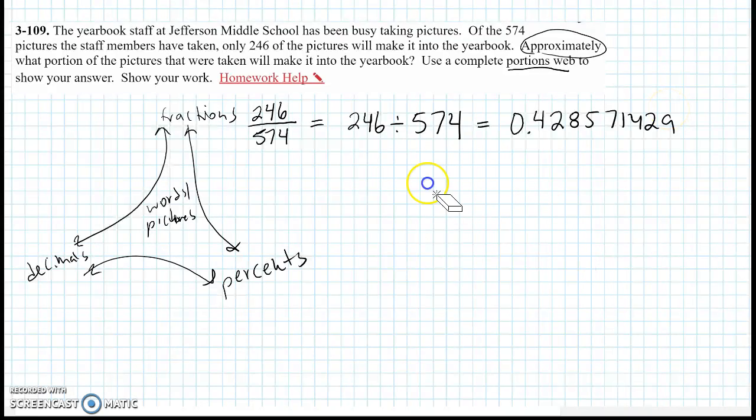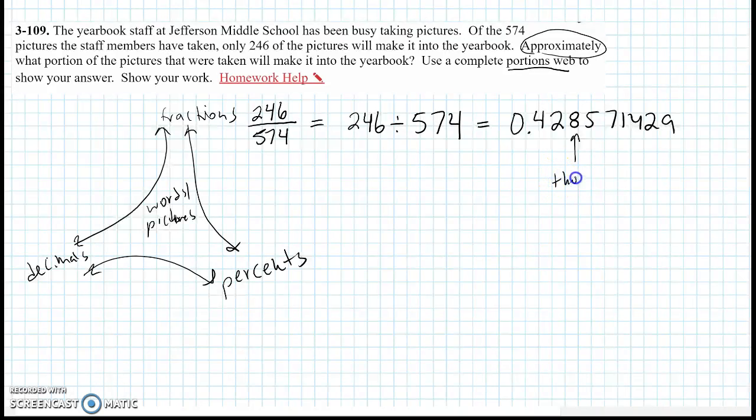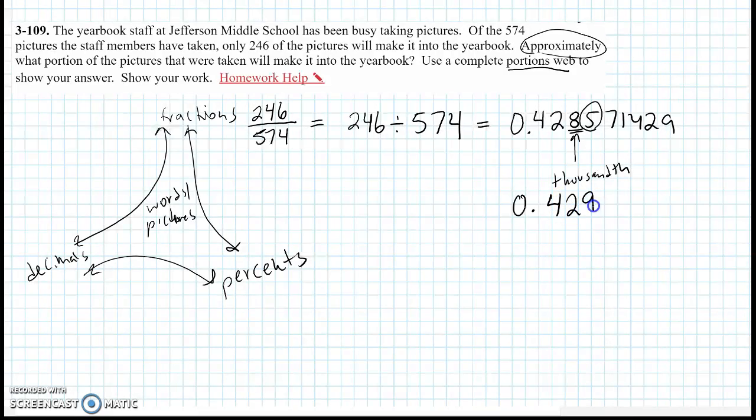But let's talk about how many decimal places do we actually need here. So let's round to the nearest thousandth place. I'm going to take a look at the 5, and I'm going to say this 5 is big enough to round this 8 up to a 9. So the decimal I'm going to use is 0.429.